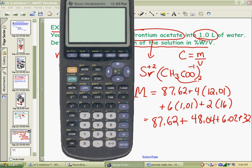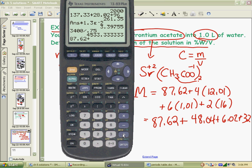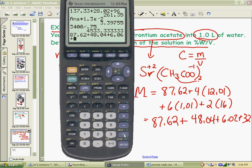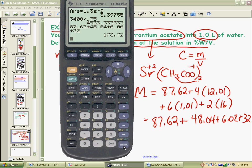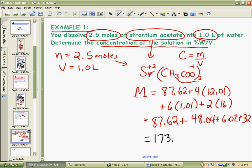So, adding all those up, turn our calculator back on, 87.62, we will add 48.04, and 6.06, I wrote 2 by accident, and 32. And you get 173.72. That was a 6. So, this is our grams per mole. For each strontium molecule you have, every mole of those molecules is 173.72 grams.